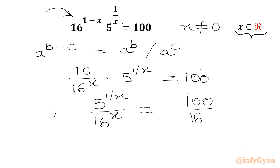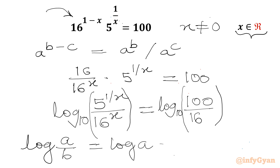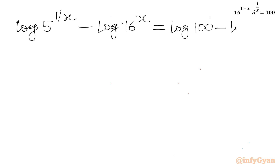Now I will take log of both sides with base 10. Using the property log(a over b) equals log a minus log b, I can write: log 5 power (1 over x) minus log 16 power x equal to log 100 minus log 16.